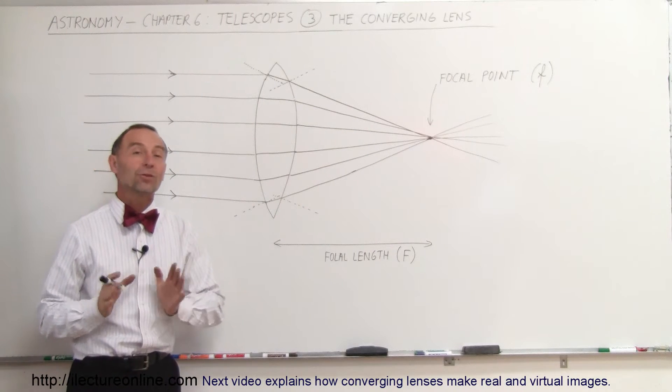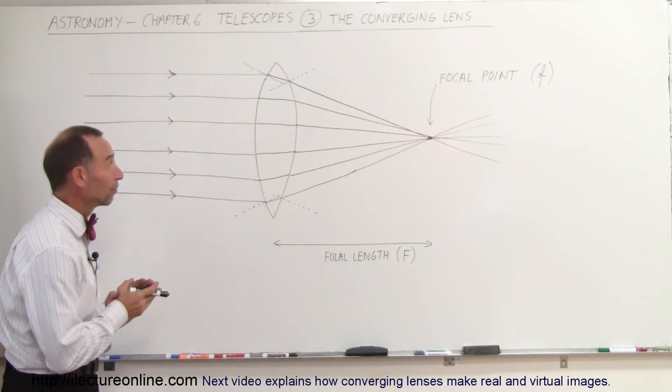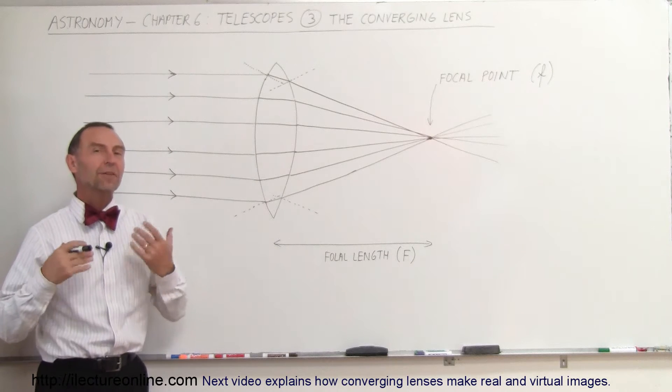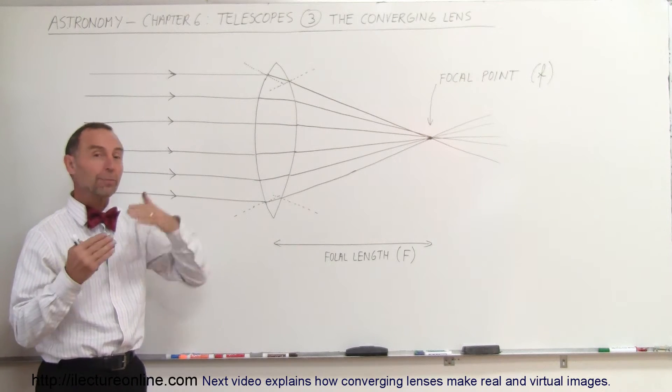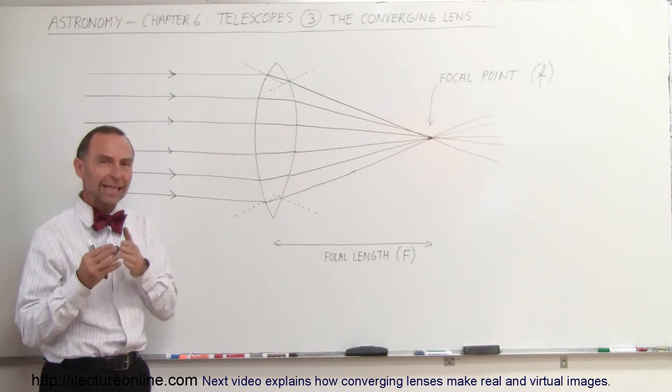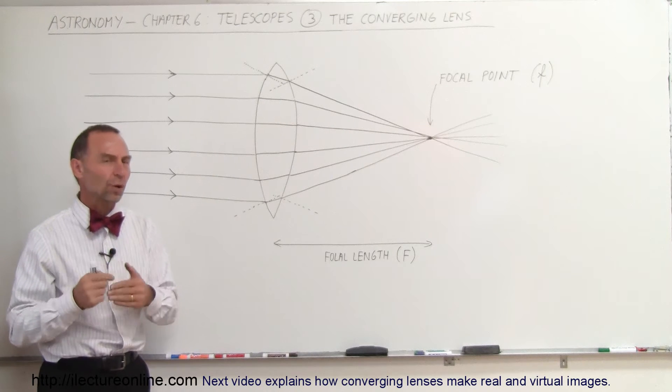Welcome to our lecture online. Here we're going to talk about the converging lens. The converging lens is made out of glass, and as we saw in the previous video, when light travels across the boundary from air to glass, it bends or refracts—it changes direction.